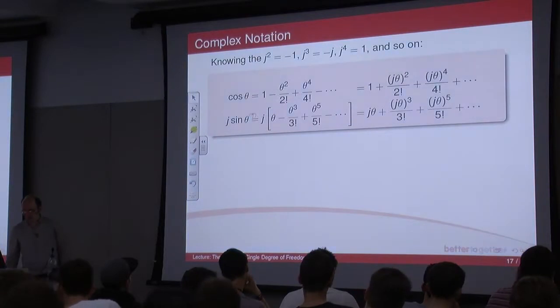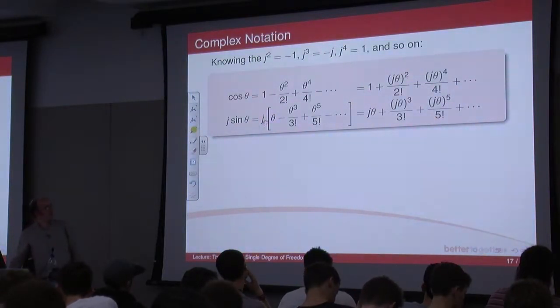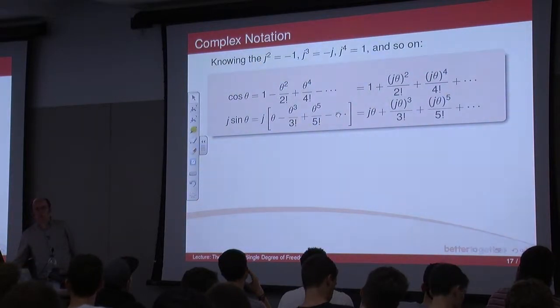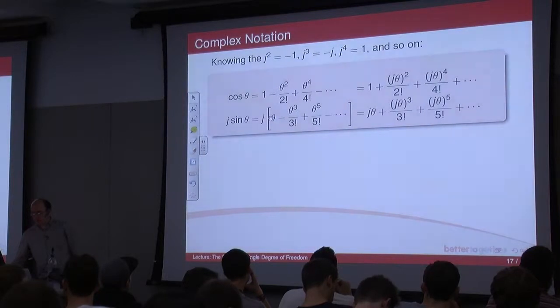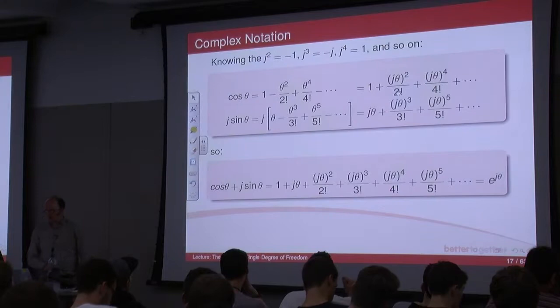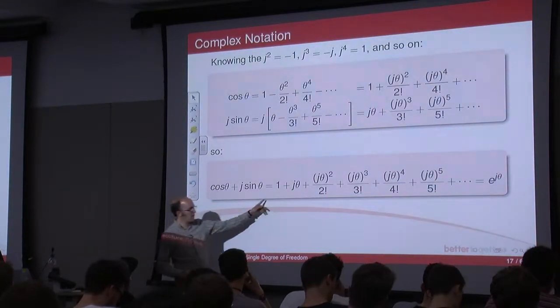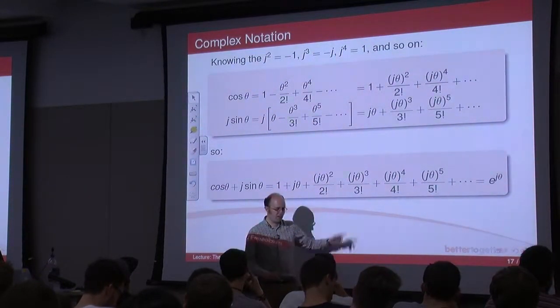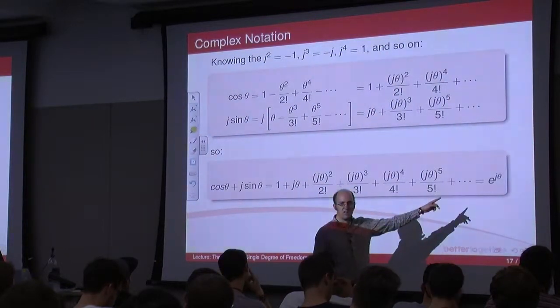And here j sine theta, well, let's take the j out. We've got theta minus plus minus plus, so you can do the same thing again. Obviously j times theta, and then j times theta, j squared is minus 1 minus j, so that takes into account that minus sign, and so on. So you end up with these two equations, and if you plug them together, you end up with this. Now, it just so happens that that's the Taylor series for e to the j theta.